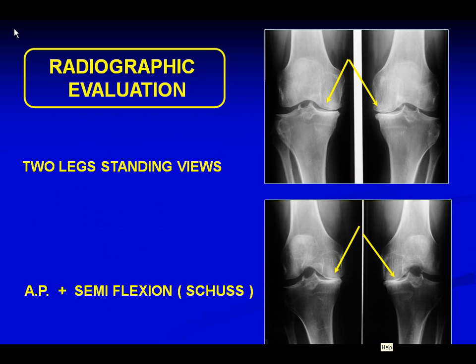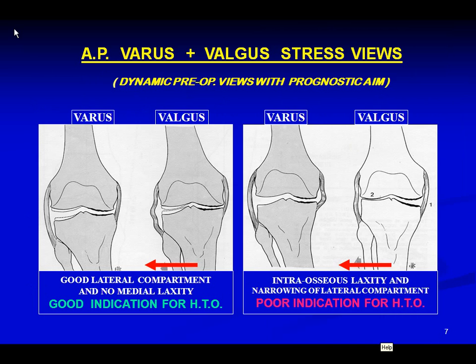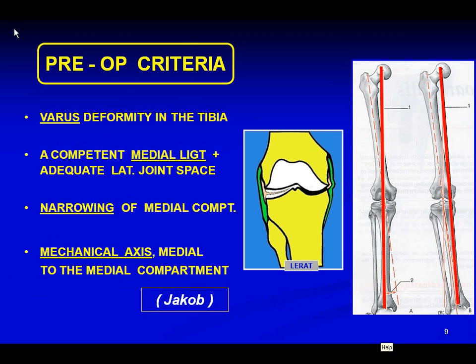As Hatim said, we should have a good radiographic evaluation before operating. We also use a classification based on that of Ahlbach, slightly modified. We have to study our criteria before operating, stressing the various deformity of the tibia, and confirming a competent medial ligament plus adequate lateral joint space. We must check the narrowing of the medial compartment and the mechanical axis, which should be medial to the medial compartment itself, following Jacob.